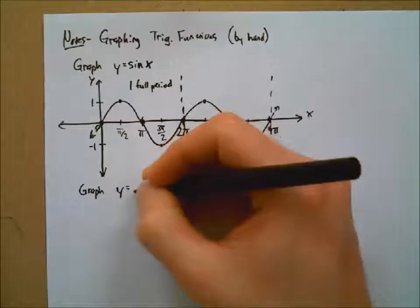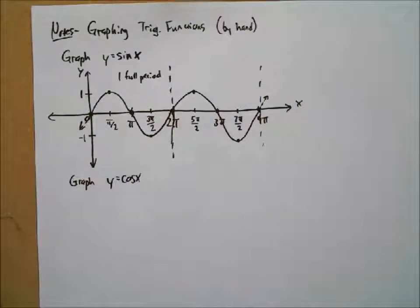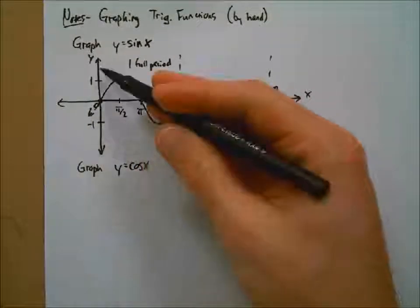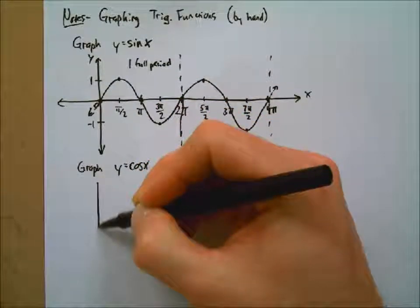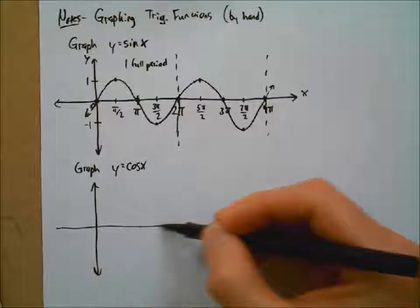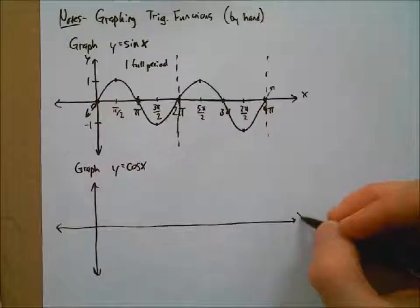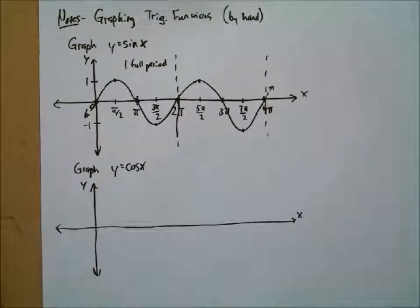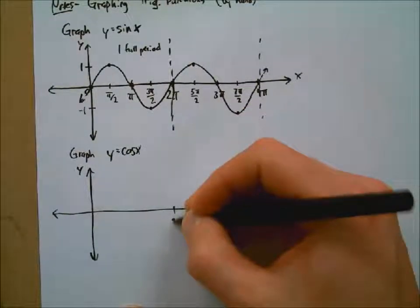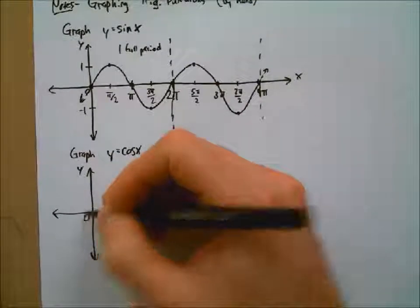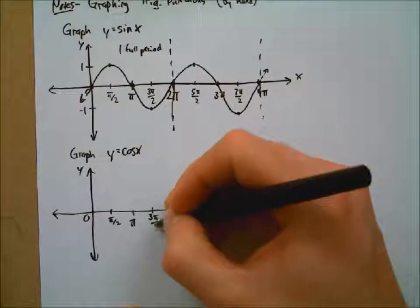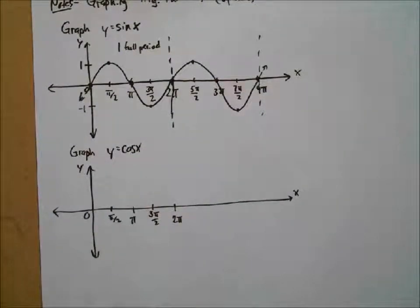Now let's try cosine x. I'm going to graph cosine x in such a way that it'll be easy for us to compare with sine of x — I'll make sure the y-axis from the sine graph lines up with the y-axis from my cosine graph, and draw my axes to be about the same size. We use sine and cosine together like peanut butter and jelly.